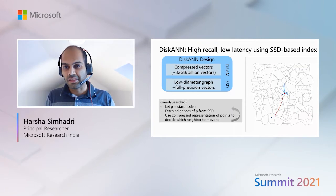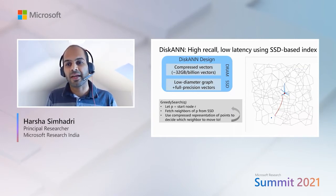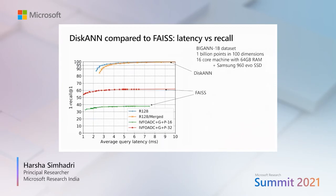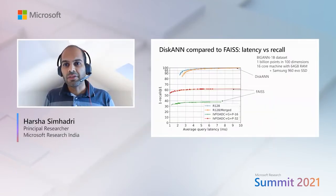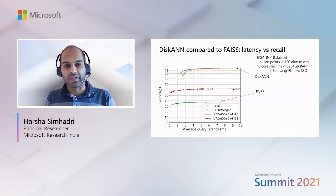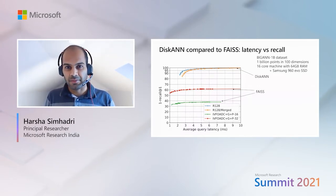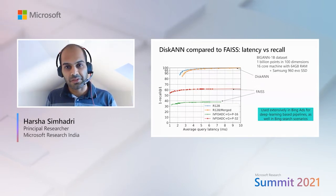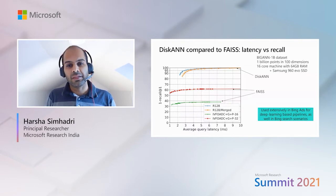Further, when nodes are touched on SSD we also fetch their full-precision vectors, which is useful for re-ranking the results at the end of the greedy search. Here's a latency versus recall plot comparing the performance of DISKANN with the only other open-source billion-scale algorithm, FAISS. Using just 64 GB of memory and inexpensive off-the-shelf SSDs, we can achieve a recall as close to 100 percent as desired at millisecond latencies. As a result of these accuracy and performance characteristics, DISKANN is widely used in Bing Ads for deep learning based pipelines and is increasingly being deployed in Bing search scenarios.